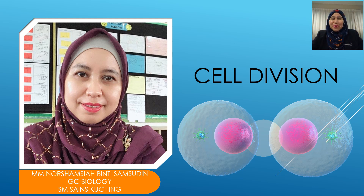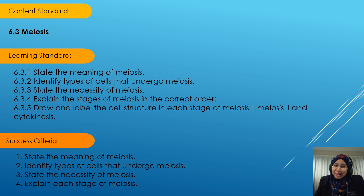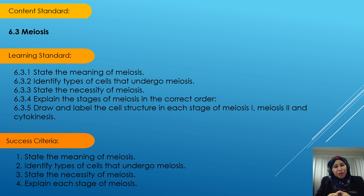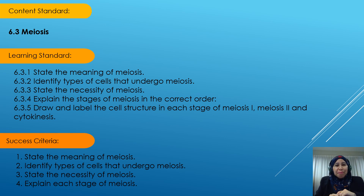Hi all! Today we are going to continue on the same chapter, which is on cell division. The content standard for today's lesson is 6.3 Meiosis. The learning standards are 6.3.1, state the meaning of meiosis; 6.3.2, identify types of cells that undergo meiosis; 6.3.3, state the necessity of meiosis; 6.3.4, explain the stages of meiosis in the correct order; and 6.3.5, draw and label the cell structure in each stage of meiosis 1, meiosis 2, and cytokinesis.